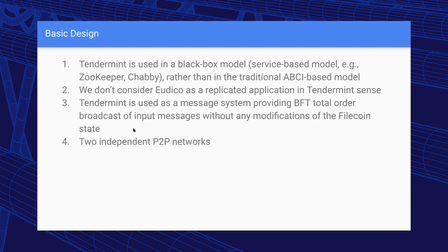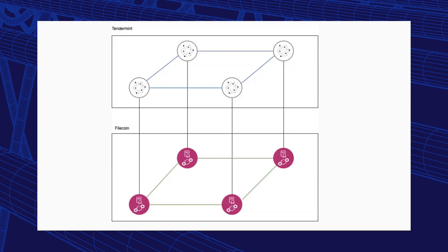The basic architecture has four nodes, each connected to the corresponding TenderMint node. All nodes have different secp keys and UtiCA clients can access them. One P2P network is for TenderMint and another for UtiCA, and the vertical lines represent HTTP interactions between nodes.